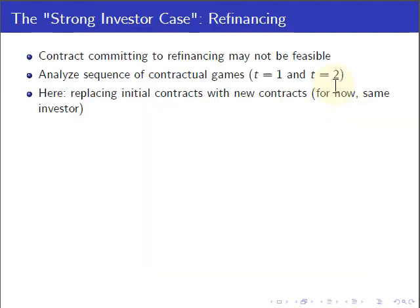Before I present the main results in more detail, let me state upfront that if we could write a contract committing both parties to refinancing terms already in the initial period, then we will not have any investment inefficiencies and basically there is no interesting case for financial contracting. So what we really want to focus on is a situation in which such contracts are not renegotiation-proof. We are very explicit about how to endogenize this in the paper, and the way we endogenize it also resonates in our empirical implications.